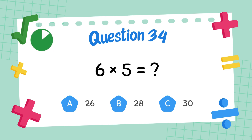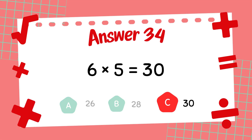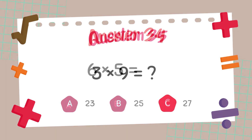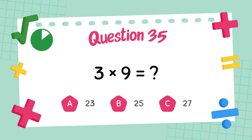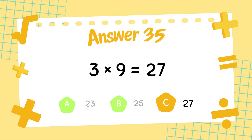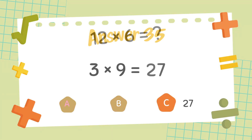What is 6 times 9? The answer is 30. What is 3 times 9? The answer is 27.